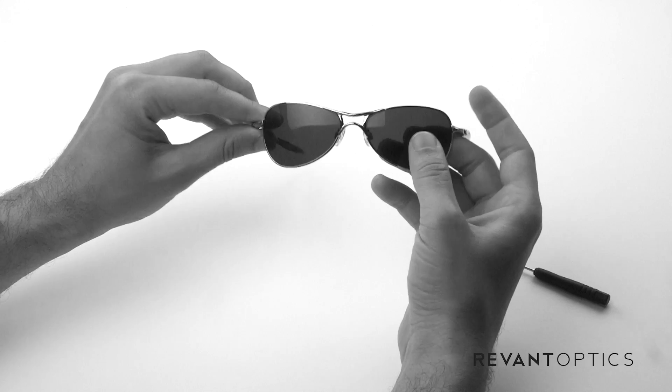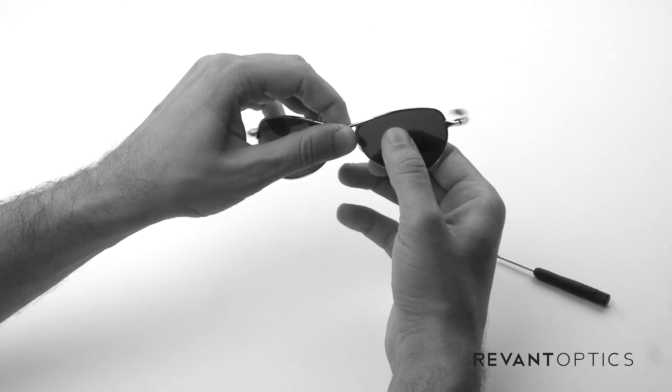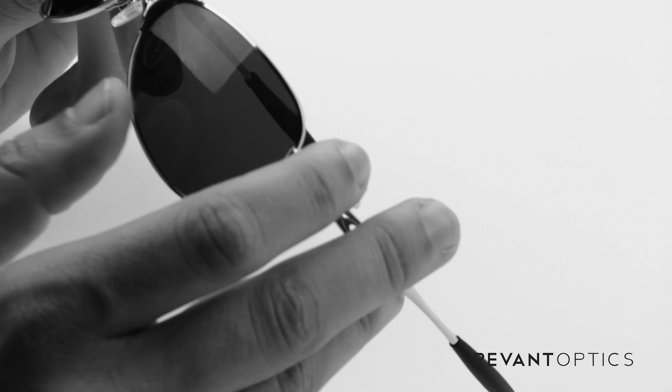That's nice and secure, and you don't want to strip the screw, so that's how you install the lens or lenses. And once you're done, just make sure it's nice and secure by pushing back and forth a little bit there.